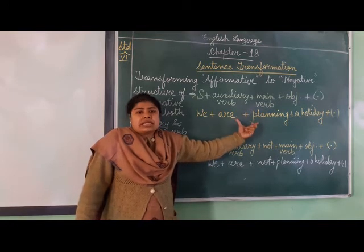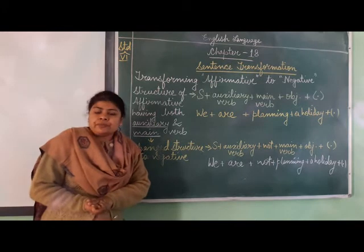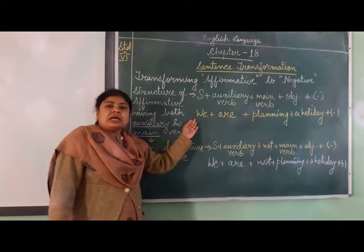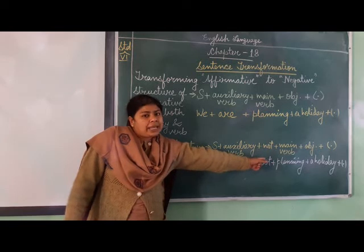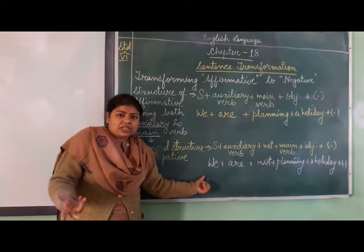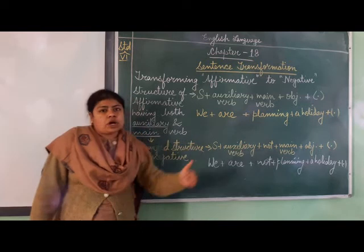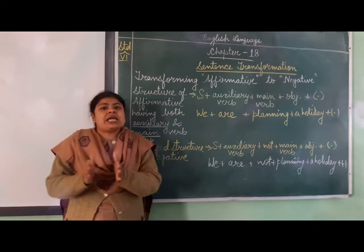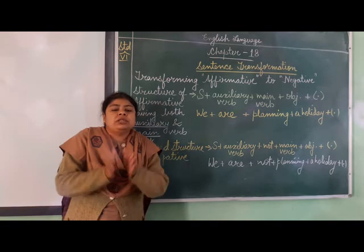Now if this type of sentence is there and we have to transform it into the negative form, we will simply put 'not' in between both the verbs. The sentence after transformation becomes: Subject + Auxiliary Verb + Not + Main Verb + Object + full stop. So the sentence is now transformed to: 'We are not planning a holiday.' Very simply, if there is both an auxiliary and a main verb in a single sentence, we put 'not' in between both the verbs.